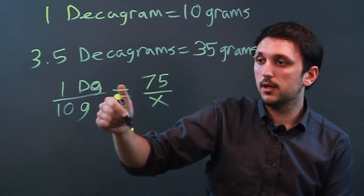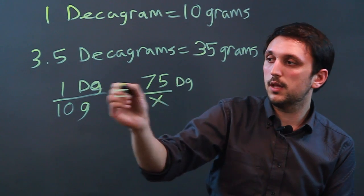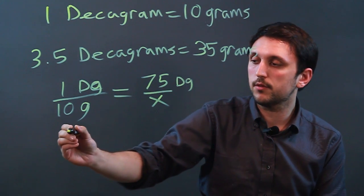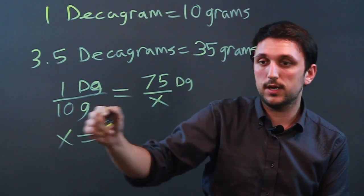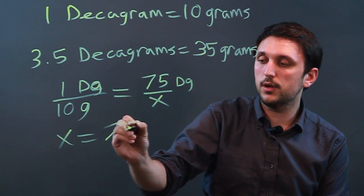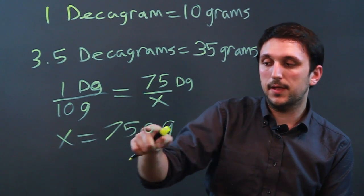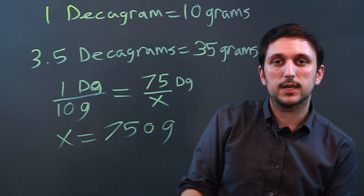So we cross multiply. And in this case, it's going to be 1 times X, so X, equals 75 times 10, which is 750 grams. That's how many grams are in 75 decagrams.